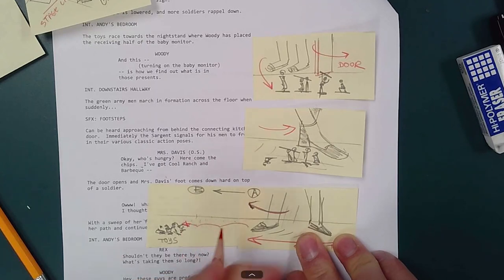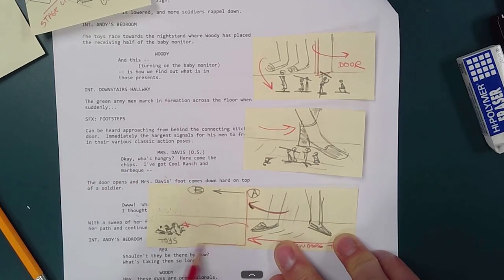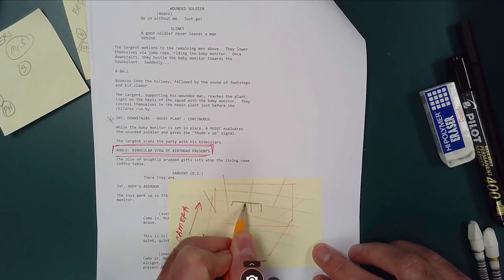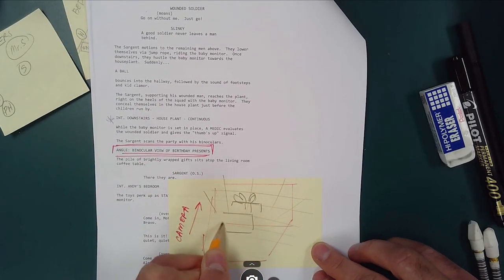When I roughboard this out, I'll actually draw the character moving across the scene in a number of panels. But for now, arrows will work. Notice the line work for the camera movement as well.